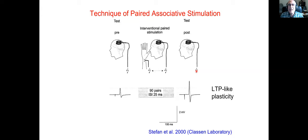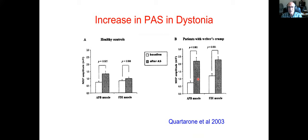Now I'm going to talk about plasticity. This has been studied with a technique called paired associative stimulation, which is something like long-term potentiation, where one pairs a shock to the median nerve with a shock to the motor cortex. If you pair them frequently, you get a phenomenon like long-term potentiation — the motor evoked potential is increased after the pairs compared to before. It turns out that this is increased in patients who have dystonia: while there is an increase in healthy controls, in patients with writer's cramp it's much more increased. So here we have an increase in plasticity by this measure.